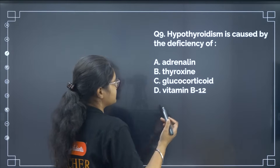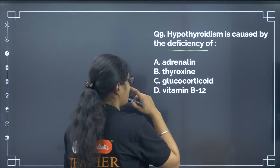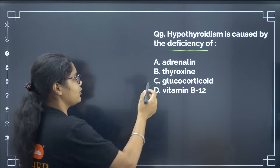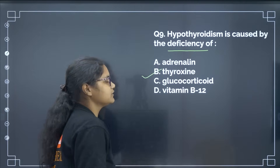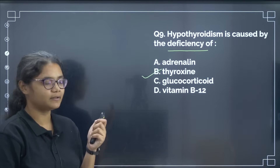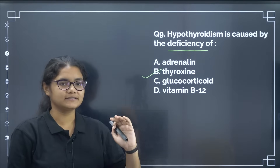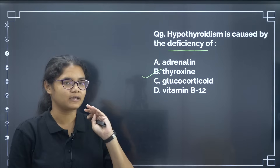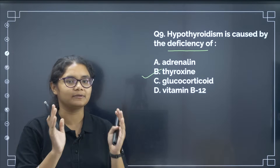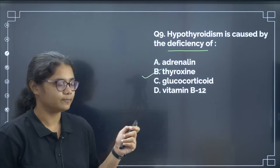Hypothyroidism is caused due to the deficiency of thyroxine — answer is option number B. The deficiency diseases for vitamins and hormones are given in a table in the NCERT book, please learn that table.